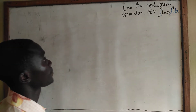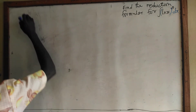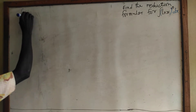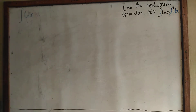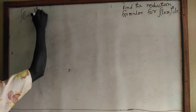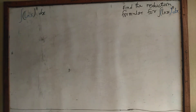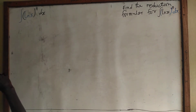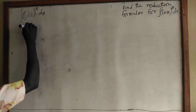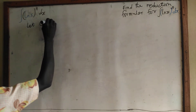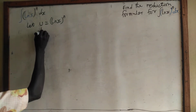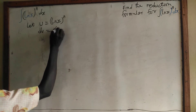Now we have the integral of (ln x) to the power n dx. We are going to use integration by parts. We are going to let u be equal to (ln x) to the power n and then dv equal to dx.